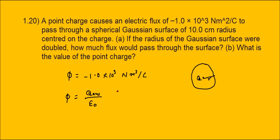Epsilon-0 has a value of 8.85 × 10⁻¹² coulomb squared per Newton meter squared. Flux is dependent on the charge present inside the Gaussian surface and epsilon-0, not on the radius or the distance. So by changing the radius of the Gaussian surface, flux won't change. If the radius is doubled, flux will remain the same.